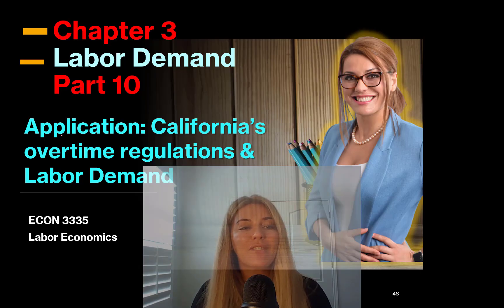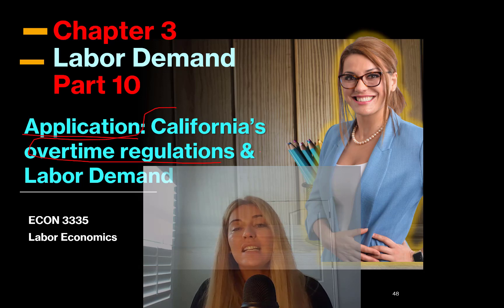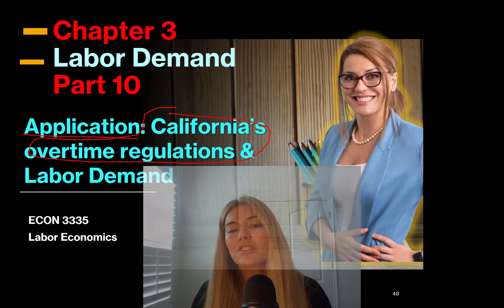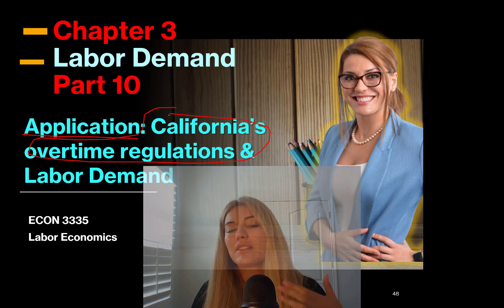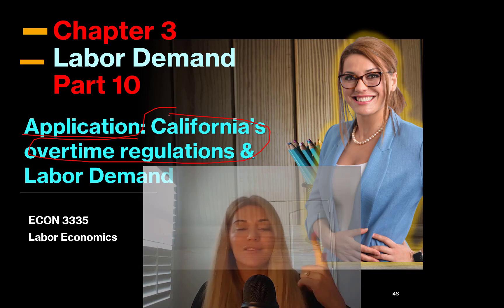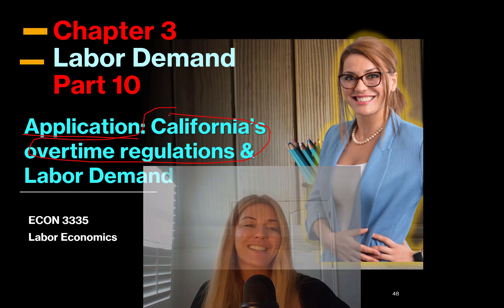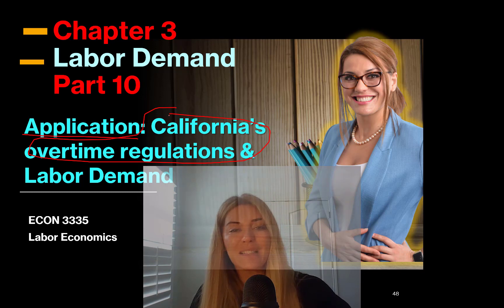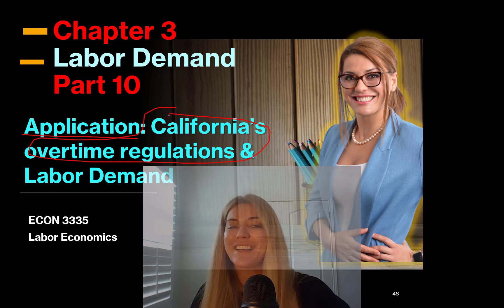I'll see you in part 10. We are going to do a policy application — California's overtime regulation. California's overtime regulation started covering everybody: it used to cover only females and then started covering men and women. We'll see what happens when that's the case. The next part will be the last part of the labor demand chapter. I'll see you then. Bye.